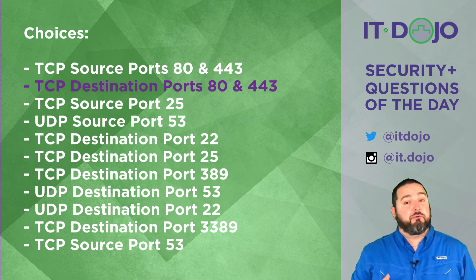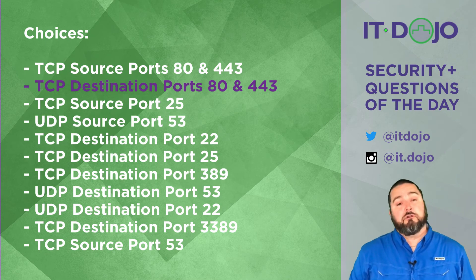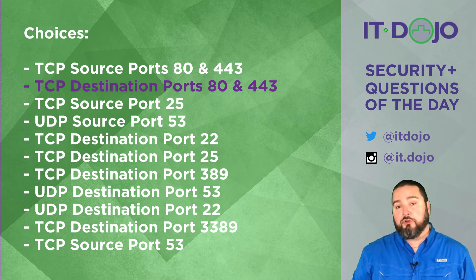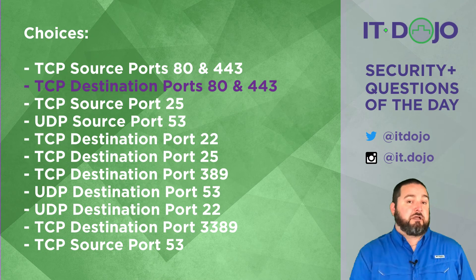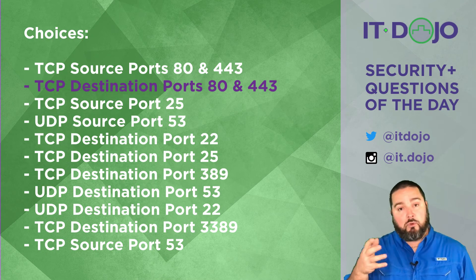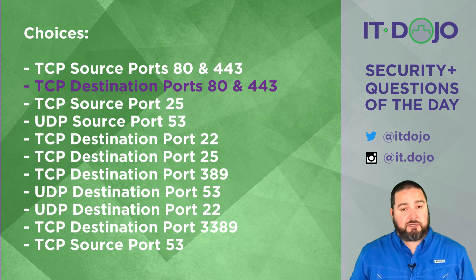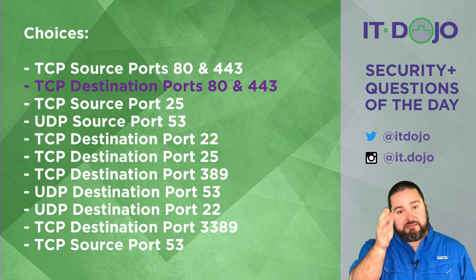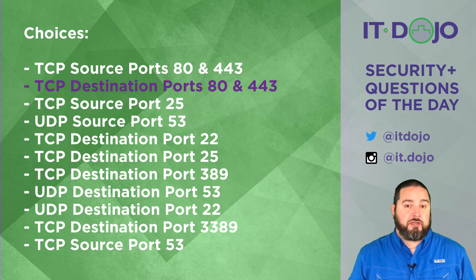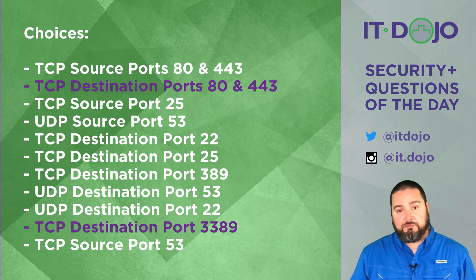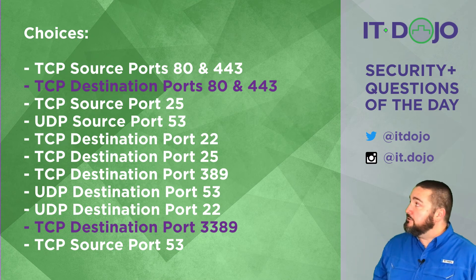The next protocol you need to allow is the Remote Desktop Protocol, or RDP. RDP servers historically listen on port 3389. When traffic leaves your network, it will come from an ephemeral source port and be destined to TCP port 3389, which is the port that RDP servers typically listen on.